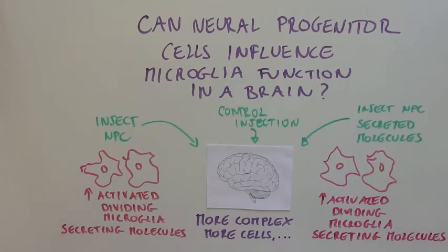This means that the NPC-secreted molecules are responsible for controlling the behavior of microglia, both in an isolated cell system as well as in a brain.